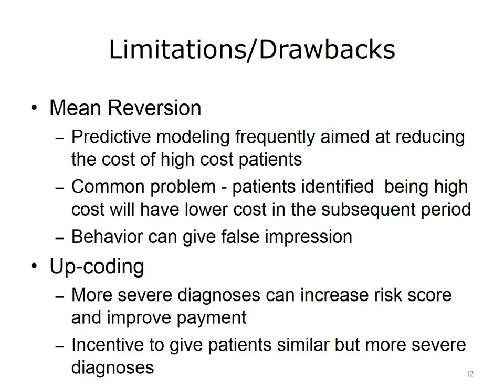There are a couple distinct limitations to predictive modeling. The first is mean reversion. Because predictive modeling is frequently aimed at reducing the cost of high-cost patients, patients identified as high-cost will tend to have lower cost in the subsequent period. This behavior, referred to as mean reversion, can give the false impression that an intervention has reduced costs, when in fact some reduction may have occurred regardless of any intervention. A drawback of risk adjustment is that it can lead to up-coding: because more severe diagnoses can increase risk score and improve payment through risk adjustment, there is an incentive to give patients similar but more severe diagnoses or codes.